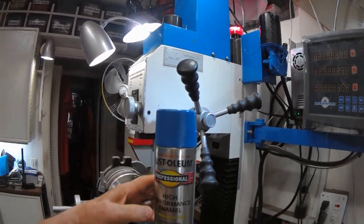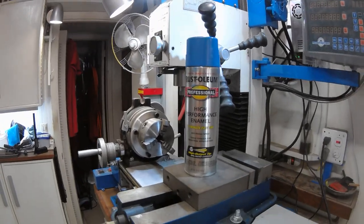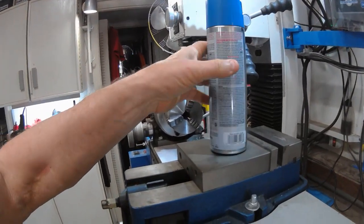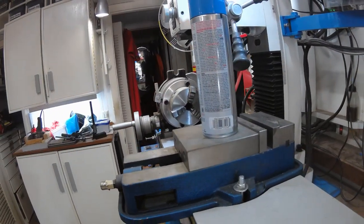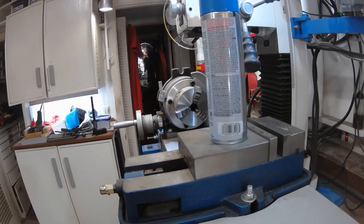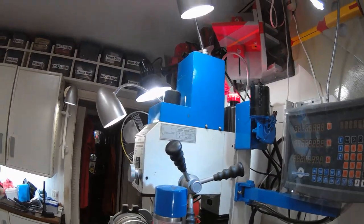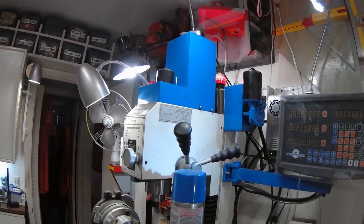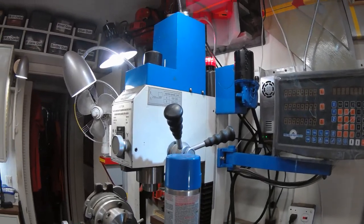I also found that there's this Rust-Oleum high-performance enamel, it's a color of safety blue, number 7524. It works quite well. You really can't tell it from the factory color and if it gets a little dust and grease it looks identical.